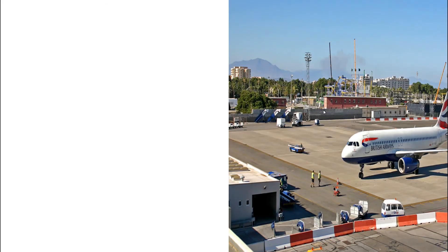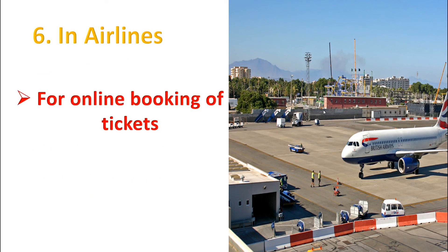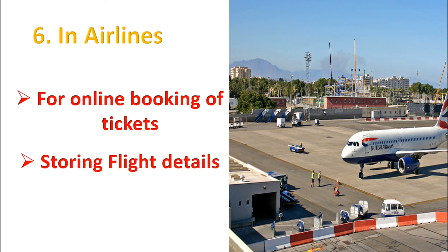In airlines! For what purpose are they using computers in airlines? For online booking of tickets and storing flight details — all the details regarding flights: its number, name, and from which place to which place it is flying — all the details are stored in the computer.